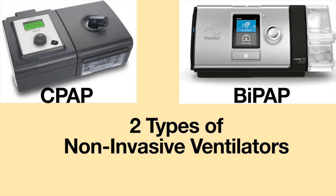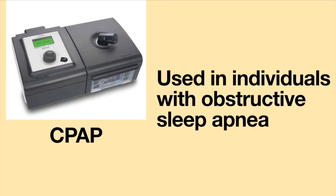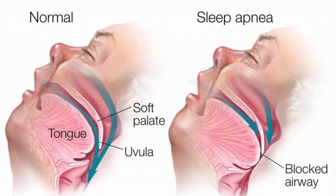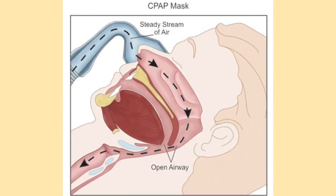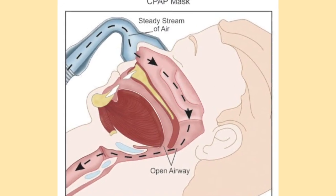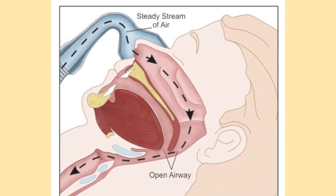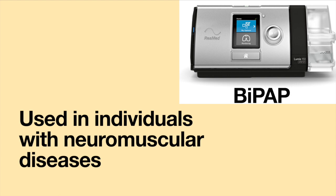There are two types of non-invasive ventilation: CPAP and BiPAP. A CPAP machine is often used in individuals with obstructive sleep apnea. When the person falls asleep, the airway collapses and blocks air from entering the lungs. A CPAP machine pushes high-pressure air into the airway, keeping it open and allowing air to reach the lungs. Without using the CPAP device, the person may die when his airway is blocked.